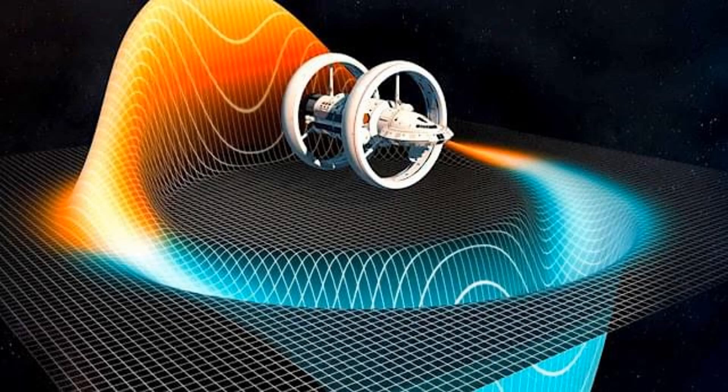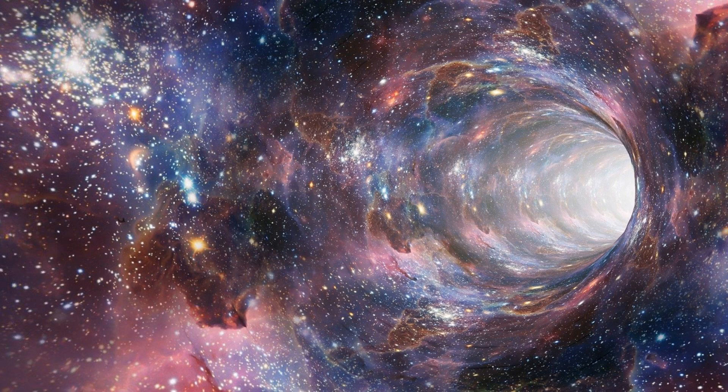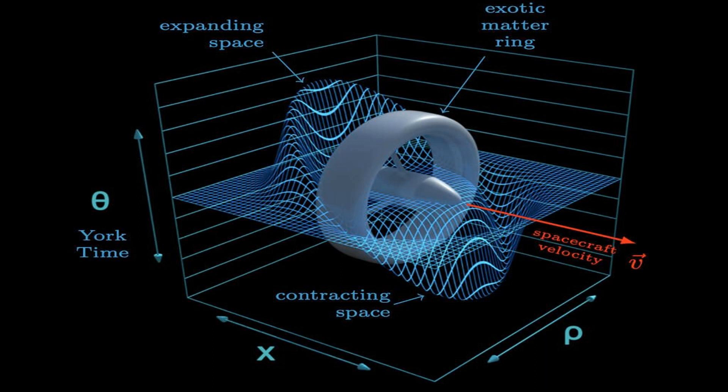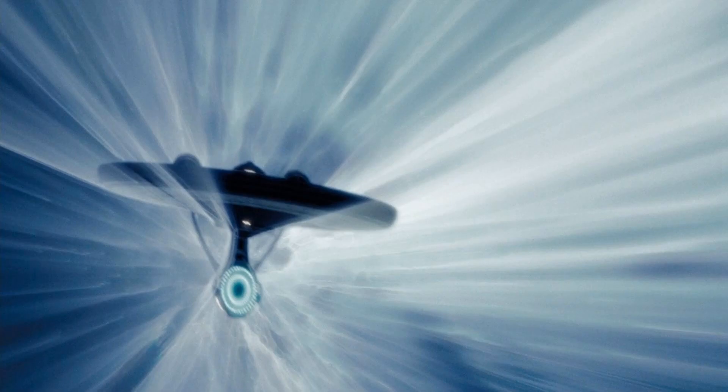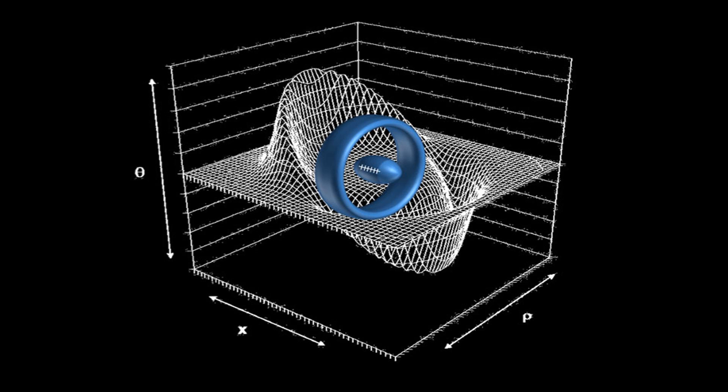To understand the concept of warp drive, we need to explore the idea of manipulating spacetime. According to Albert Einstein's theory of general relativity, mass and energy can cause spacetime to curve. By creating a warp bubble around a spacecraft, we could potentially distort spacetime ahead of the vessel while compressing it behind. This manipulation of spacetime could effectively create a shortcut, allowing the spacecraft to traverse vast distances in a shorter amount of time, surpassing the limitations imposed by the speed of light.